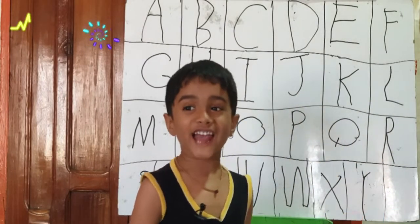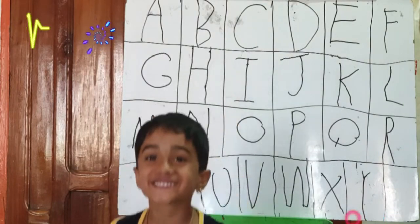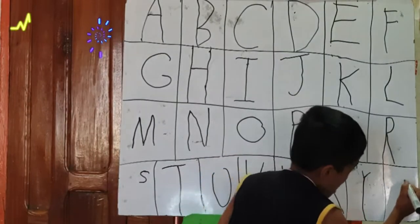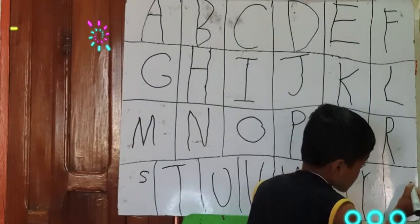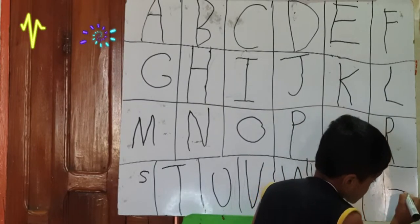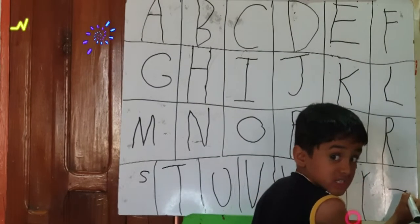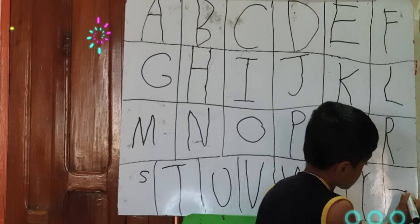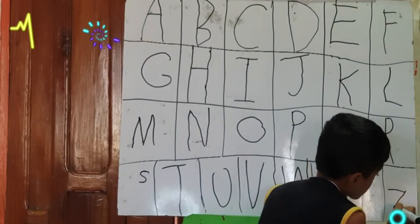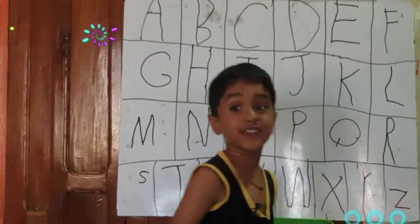Now the last letter is Z. One sleeping line, one slipping line, one cross down, one slipping line.